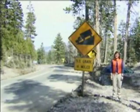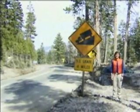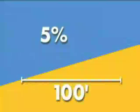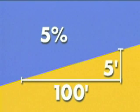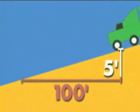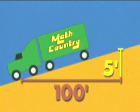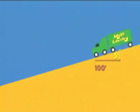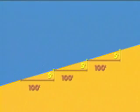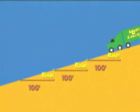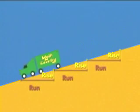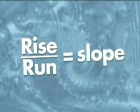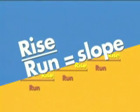But what does this sign really mean? What's a 5% grade, anyway? If a hill has a grade of 5%, it means that for every 100 feet you travel horizontally, you gain or lose 5 feet vertically, depending on which way you're driving. So driving down this hill, for every 100 feet of horizontal change, there's a vertical change of 5 feet. This pattern repeats itself as long as the road maintains the same grade. Sometimes the vertical change is referred to as the rise, and the horizontal change is referred to as the run. The ratio of rise to run is called slope. The slope of a line describes its steepness or rate of change.